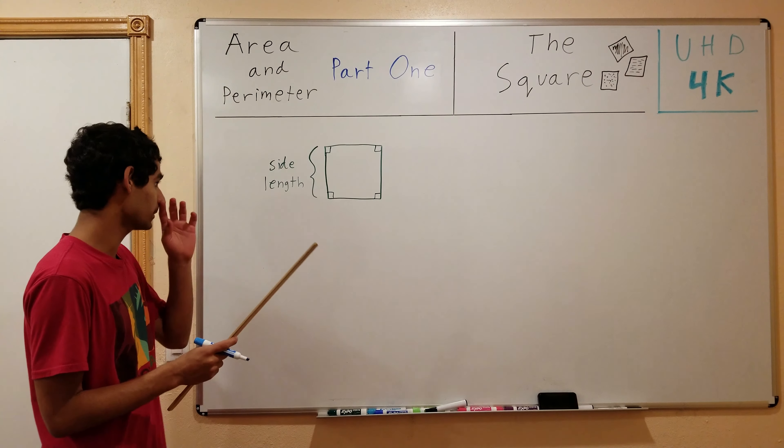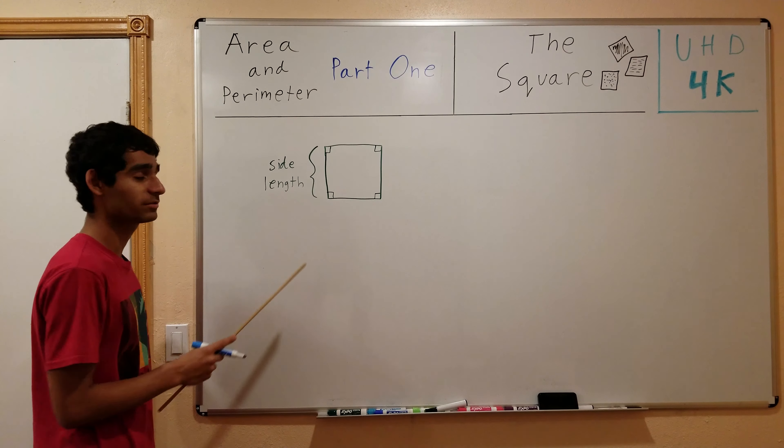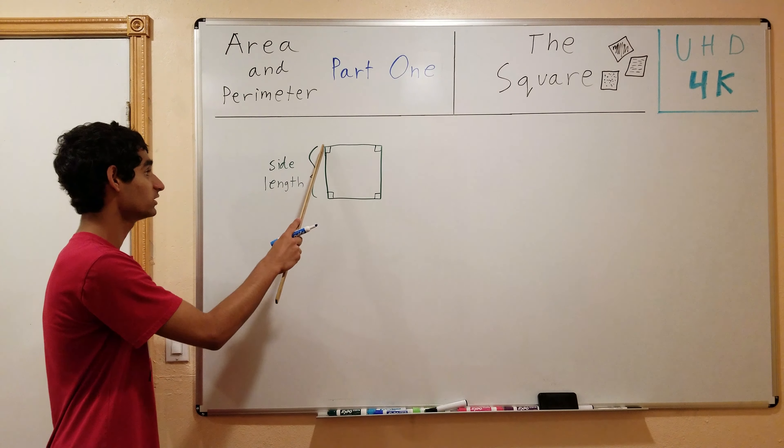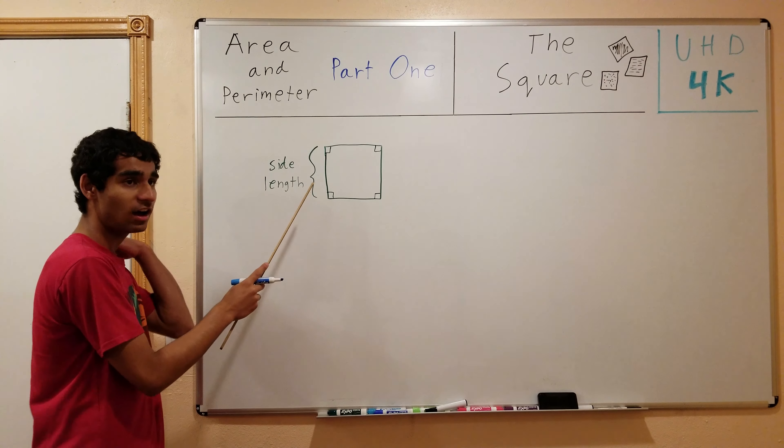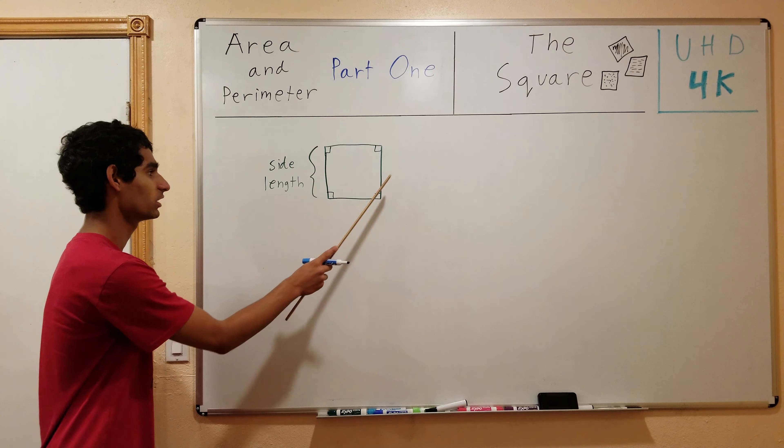So the perimeter of a square is simply equal to the side length times 4. Why? Because the length of the side of a square is known as the side length. And how many sides are there? 1, 2, 3, 4.